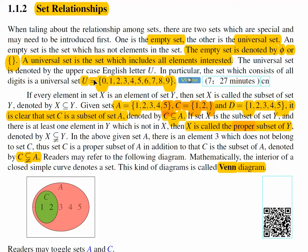Now we have a definition for the subset. Here is an example. C has two elements, 1 and 2. A has five elements, 1, 2, 3, 4, 5. Every element inside C, like 1 or 2, is an element of A. So then we say C is a subset of A, which is denoted with a symbol like 'less than or equal' but with the round side on the left. It's not really less than or equal — it denotes the set relationship. C is contained in A, or C is a subset of A.